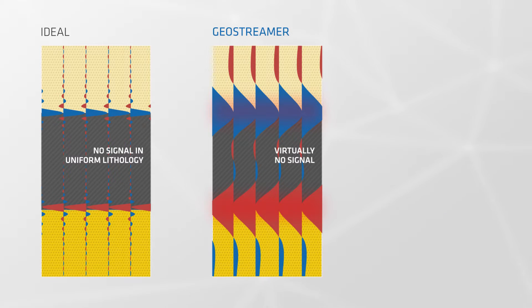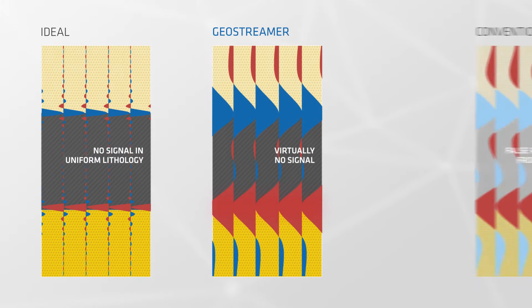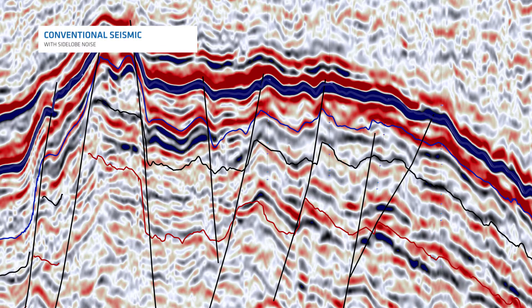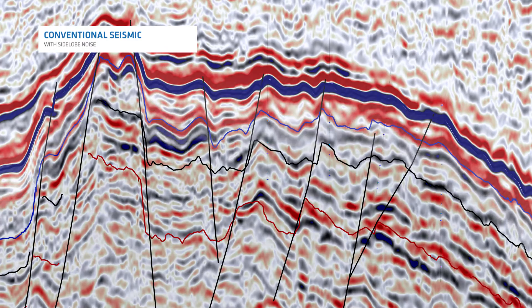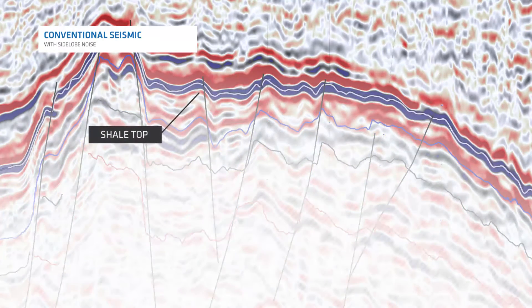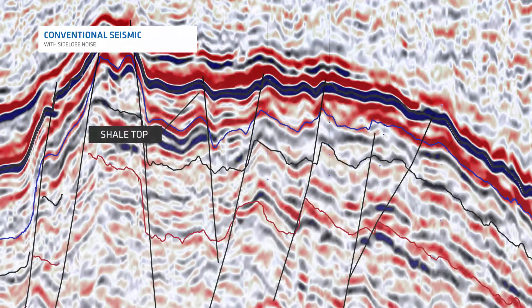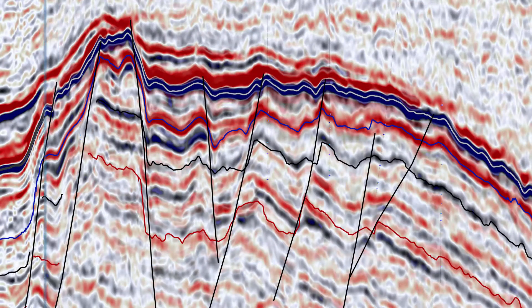Geostreamer broadband data meets these requirements, whereas band-limited conventional data suffers from false reflections caused by side lobes. These images of band-limited conventional seismic illustrate the problem: only the top of the shale interval can be interpreted with confidence. The bottom of the shale interval and the reservoir sand below cannot be interpreted due to side-lobe noise.